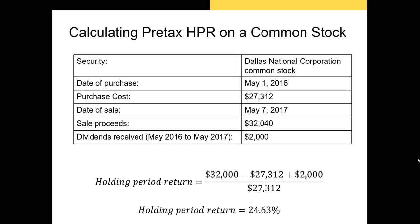Let's look at some examples. For the pre-tax holding period return on a common stock: we purchased the stock on May 1st, 2016 for a total of $27,312, and we sell on May 7th for about $32,000. In the interim, we earned $2,000 in dividends. Our holding period return is just the total value at the end minus the total value at the beginning plus dividends received, divided by the total value at the beginning — giving us 24.63%.